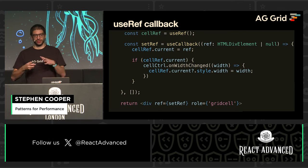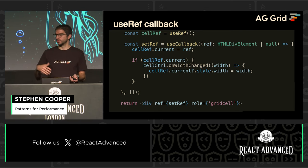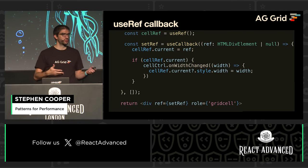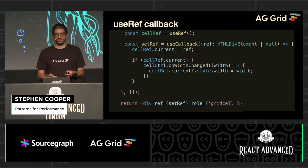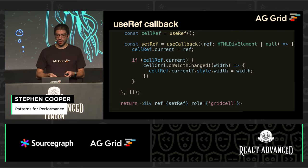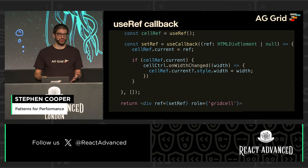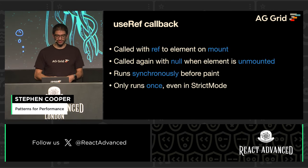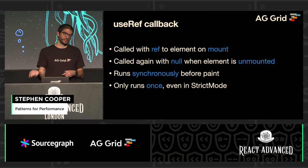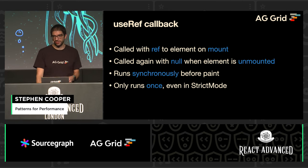If we come back and update our code for our cell reference, we define our reference and set up this callback. Within this callback, we do the same code — we listen to our cell controller for the width changes and apply the style directly. This now runs synchronously to start with, and also enables us to update the width dynamically without causing any renders. The callback ref is called when the element is mounted, called again when it's unmounted, runs synchronously — which is key for us — and it only runs once, so you can avoid some strict mode issues.